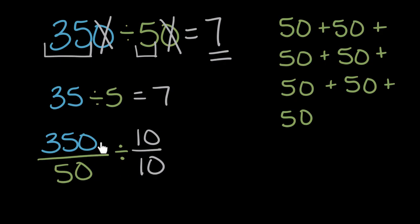And when we divide whole numbers by 10, we have a trick we can use, a pattern, which is that the whole number, in this case 350, when it's divided by 10, we drop a zero from the end. So 350 divided by 10 is 35.